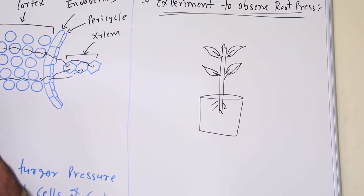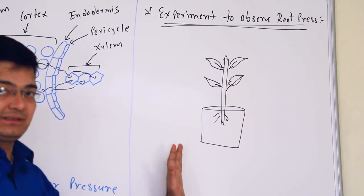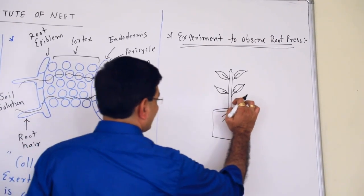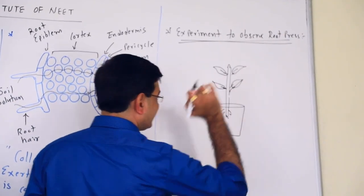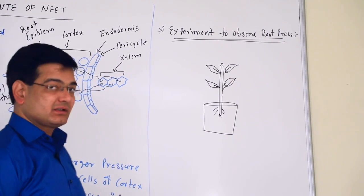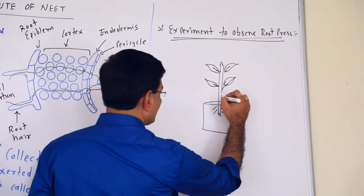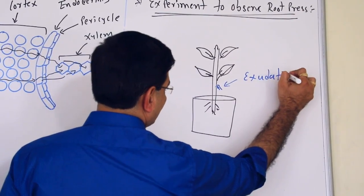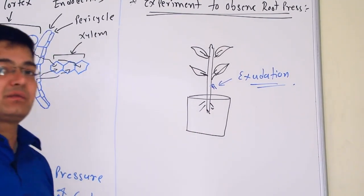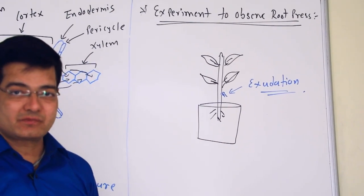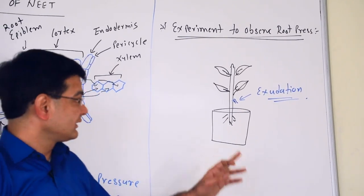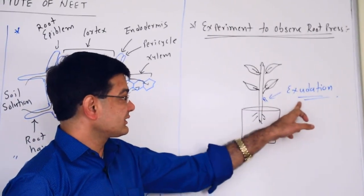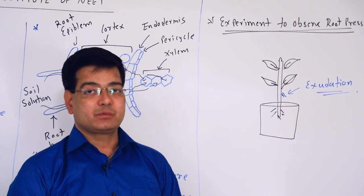In the laboratory, we can observe root pressure. We take a healthy, adequately watered plant in the laboratory and cut the stem from outside slightly. After some time, water exudes out from that region. This exudation of water is the indication of root pressure. As root pressure is continuously carried out, the water rises in small plants, and we can observe the root pressure in the laboratory.